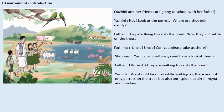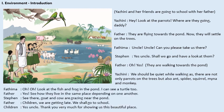They are walking towards the pond. We should be quiet while walking, as there are not only parrots on the tree but also ants, spiders, squirrels, minas and monkeys. Look at the fish and frog in the pond. I can see a turtle too. See how they live in the same place depending on one another.